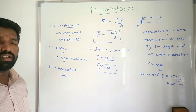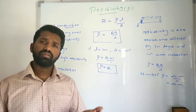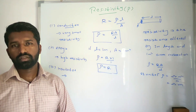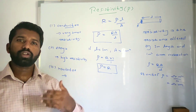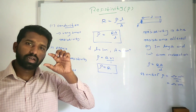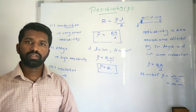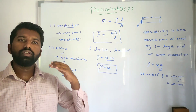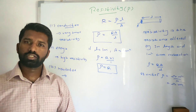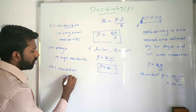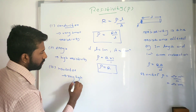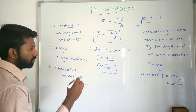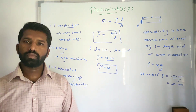Now we will see about insulators. Insulators have a very high resistivity, so due to their very high resistivity these materials will not conduct electricity. We are using them for protective covering. The plastic covering over a copper wire — you can see — the plastic covering will not conduct electric current, so it is a protective covering for the contact. This is the thing about resistivity.